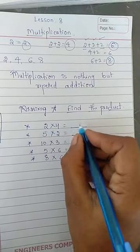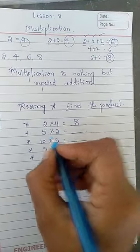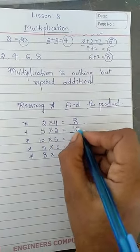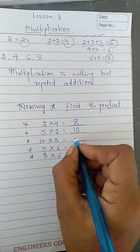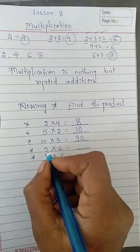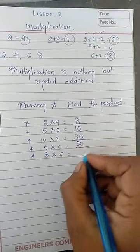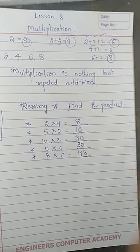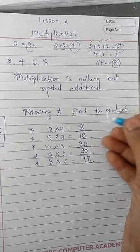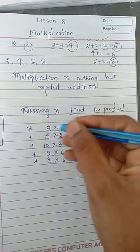What is that? 2×4 is 8. Yes or no? 2×4 is 8. 5×2 is how much? 5×2 is 10. 10×3 is 30. 5×6 is 30. 8×6 is 48. Like this you have to find the product means you have to write the multiplication of these two numbers. You have to multiply these two numbers and you have to write the answer for that.